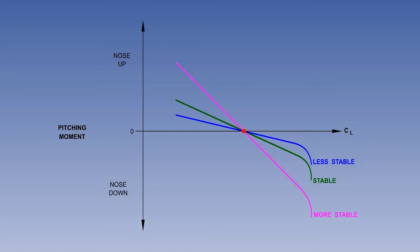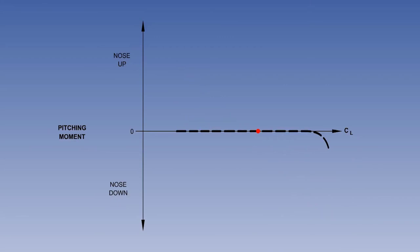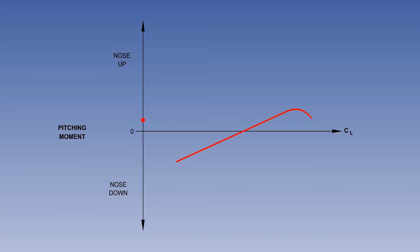What does a horizontal plot represent? An increase in angle of attack generates no pitching moment, nor does a decrease in angle of attack. This plot represents neutral longitudinal static stability. What about an upward-sloping plot? An increase in angle of attack generates a nose-up pitching moment — this is not good. A decrease in angle of attack generates a nose-down pitching moment — again, not good. When the slope of the plot is upwards from left to right, it represents negative longitudinal static stability. As with positive longitudinal static stability, the steeper the slope, the greater the instability.